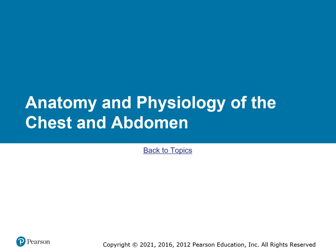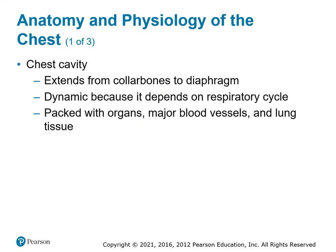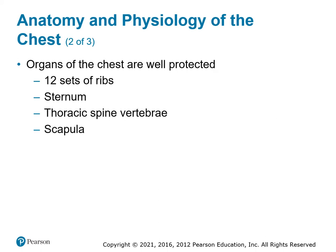Let's do a review of the abdominal and chest cavities. The chest cavity extends from the collarbones all the way to the diaphragm. Because the diaphragm is in motion, the chest cavity expands and contracts as needed, depending on the respiratory cycle. It's packed with organs, major blood vessels, lung tissue — all things that could be very serious if injured. You have 12 sets of ribs, the sternum, the thoracic spinal vertebrae, and the scapula, giving you a cage around your organs while still allowing the flexibility to expand and contract the chest.